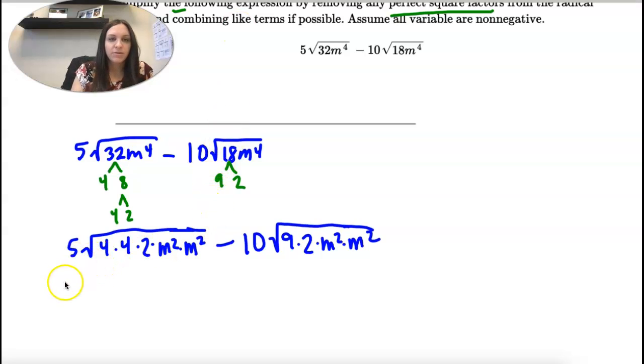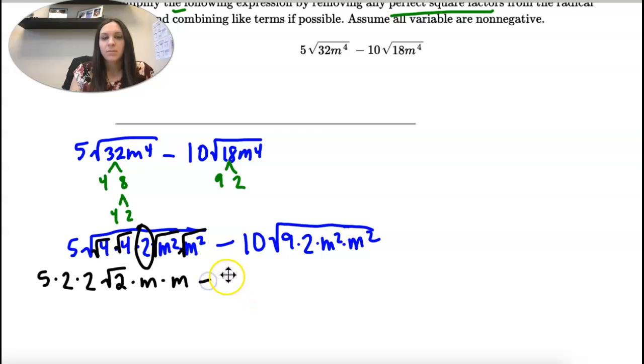So, let's start taking square roots. I have a 5. The square root of 4 is 2. The square root of 4 is 2. And then this 2 is still left in the square root. Square root of m squared is just m. Square root of m squared is just m. Minus 10. The square root of 9 is 3. This 2 is left in the square root. Square root of m squared is m.